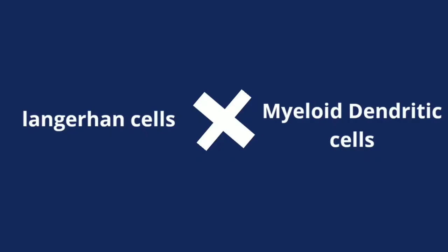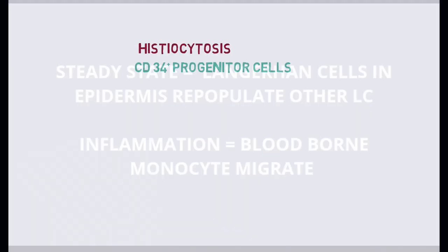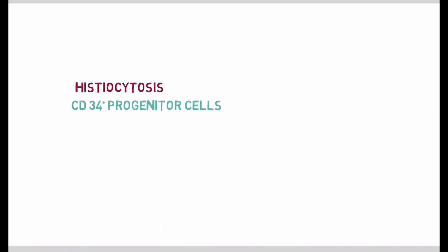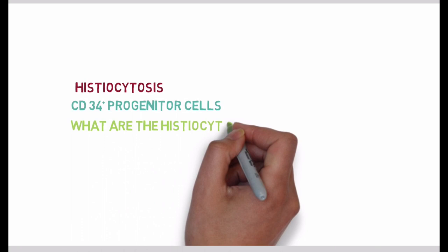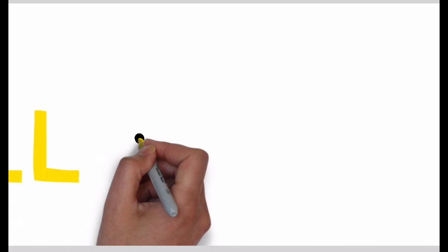Histiocytes present in the skin are Langerhans cells, macrophages, monocytes, and dermal dendritic cells. It is believed that Langerhans cells do not arise from the myeloid dendritic cells, but from fetal liver-derived monocyte precursors that migrate to the epidermis before birth. After birth, in a steady state, epidermal Langerhans cells give rise to other Langerhans cells. During inflammation, monocytes derived from the neutrophil-monocyte colony-forming unit migrate to the tissues and form macrophages and other dendritic lines. Langerhans cells and dermal dendritic cells are dendrocytes, meaning they have long dendrites for antigen presentation.